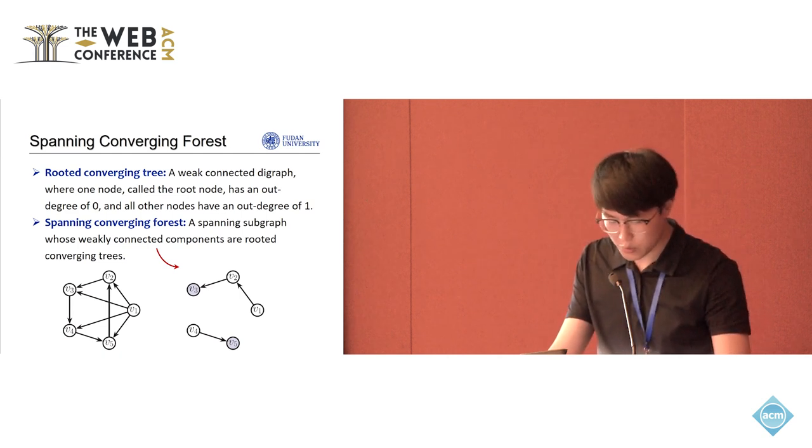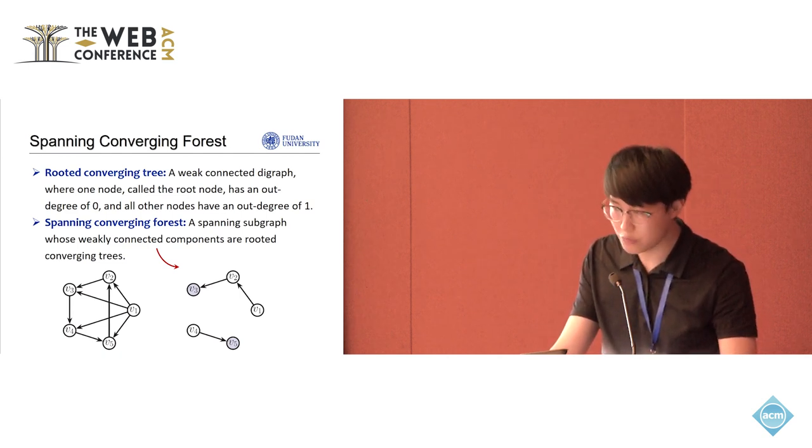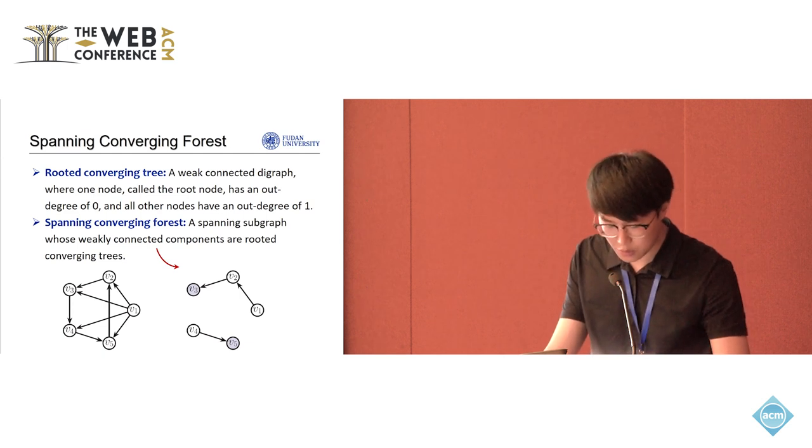the graph on the right side represents one possible spanning converging forest derived from the left graph with root node marked in blue.